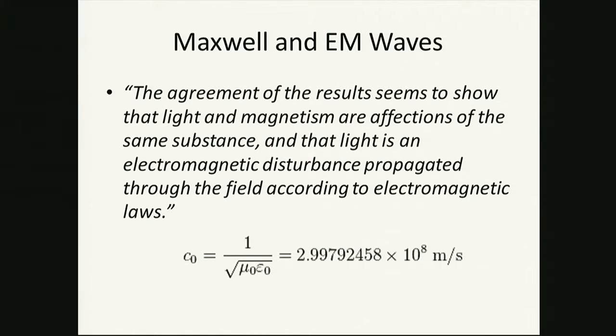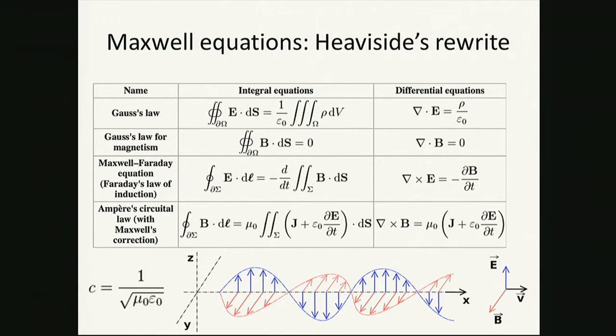Maxwell's Equations. Here's a phrase from the Maxwell paper: 'The agreement of the results seems to show that light and magnetism were affectations' — that's a lovely word — 'of the same substance, and that light is an electromagnetic disturbance propagated through the field according to electromagnetic laws.' And there's the speed of light. If we look at the Heaviside rewrite, there it is with the speed of light, and this idea of an electromagnetic wave where B and E are coupled together to propagate. There's the Maxwell additional displacement term at the end. There are Maxwell's Equations, either in integral form or in differential form.